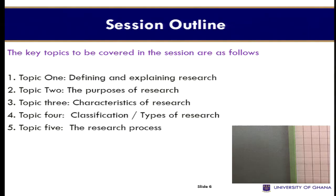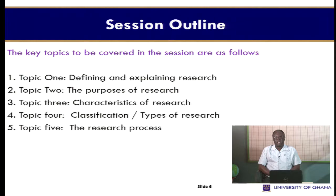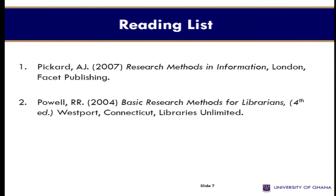You should also be able to identify and list the types of research, and outline and discuss the stages of the research process. The topics to be covered in this session are: one, defining and explaining research; two, the purposes of research; three, the characteristics of research; four, classification and types of research; and finally, the research process. These are your prescribed texts, which I expect you to read alongside the handouts I will provide.